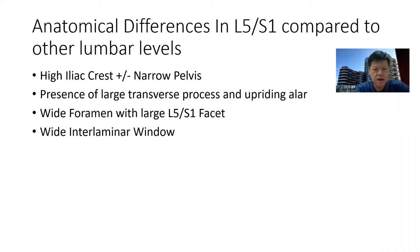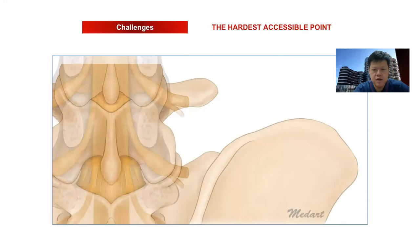However, in L5S1, unlike other lumbar levels, there is a high iliac crest or narrow pelvis. There is also the possibility of an upstanding ALA close to the large transverse process, narrowing the window further, a wide foramen, a large L5S1 facet, and a wide interlaminar window. These are the specific characteristics of the L5S1 level.